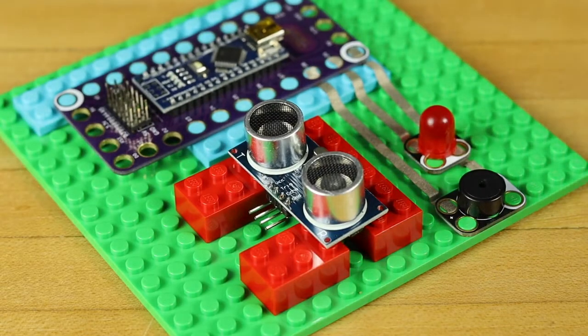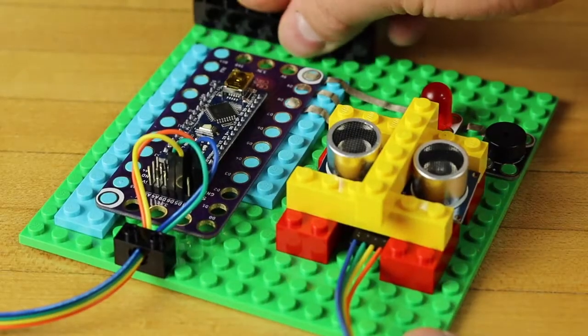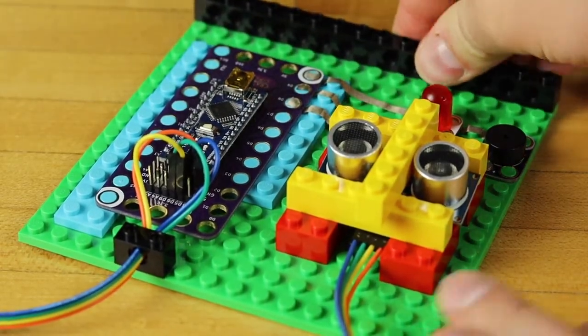Use some additional Lego components to secure your ultrasonic rangefinder into place. We also threw a couple of Lego Technic pieces onto the top. This way we could attach a lanyard so we could wear it around our neck.